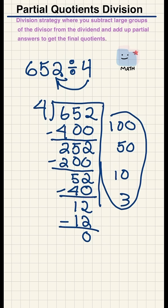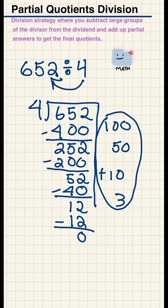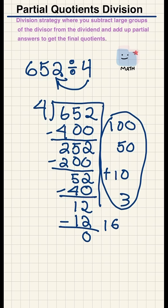Now that I have my partial quotients on the side, all I do is add them up, and that is my final answer. So 100 plus 50 plus 10 and 3 is 163.